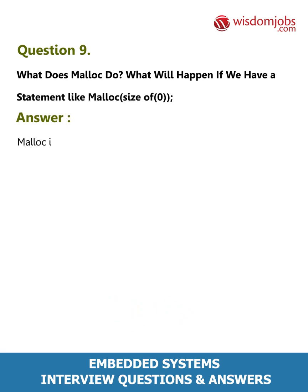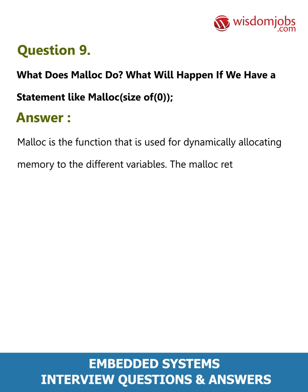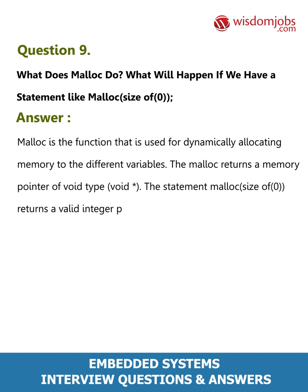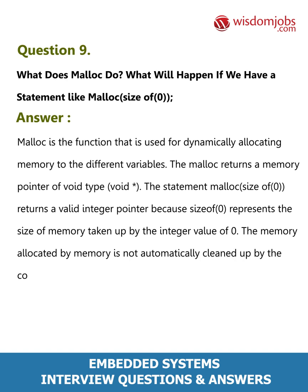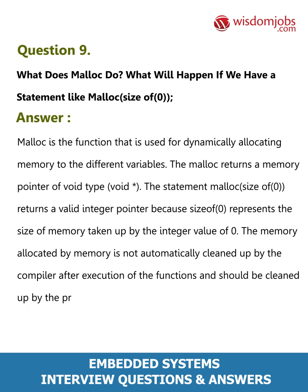Question 9: What does malloc do, and what happens with malloc(sizeof(0))? Answer: malloc is used for dynamically allocating memory to variables; it returns a void pointer (void*). The statement malloc(sizeof(0)) returns a valid integer pointer because sizeof(0) represents the size of memory taken up by the integer value zero. Memory allocated by malloc is not automatically cleaned up by the compiler and must be freed by the programmer using the free function.